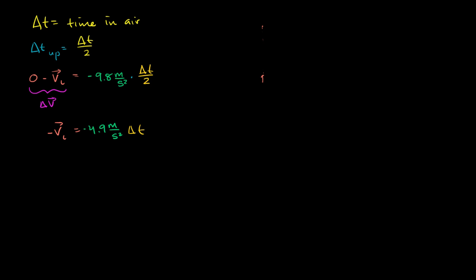And then we multiply both sides times the negative, we get our initial velocity is just going to be equal to 4.9 meters per second squared times the total time that we are in the air. Or you could say it's 9.8 meters per second squared times half of the time that we're in the air. Either of those would get you the same calculation.